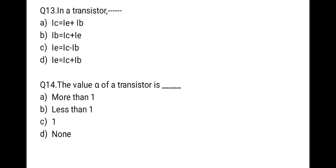The next question: in a transistor — first: IC = IE + IB; second: IB = IC + IE; third: IE = IC − IB; last: IE = IC + IB. The emitter region emits charge; this charge is collected at the collector, and a few charges recombine with holes at the base. So the total emitter current IE equals the sum of base current IB and collector current IC. The correct option is IE = IC + IB.